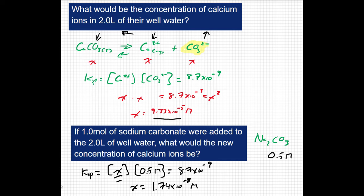So what happened by adding carbonate? Well, my initial concentration of the calcium ion was 9.33 times 10 to the negative 5 molar. My new concentration of calcium ion is 1.74 times 10 to the negative 8 molar. So I've decreased my concentration by more than 1,000, which is pretty impressive.